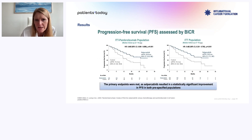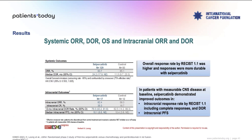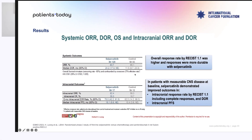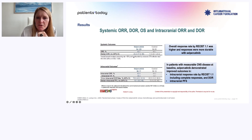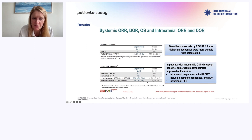Very important data. Selpercatinib also offers a better response rate — more than double at 84% versus 65% for control. Duration of response is also doubled: 24 months for Selpercatinib versus 11.5 months for control. And intracranial response rate is 82% for Selpercatinib versus 58% for control. The cumulative risk of developing brain metastasis is markedly reduced over time with Selpercatinib. Basically everything improved.